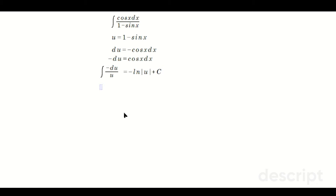Now u is 1 minus sine x, so you're going to have negative ln of the absolute value of 1 minus sine x plus C.